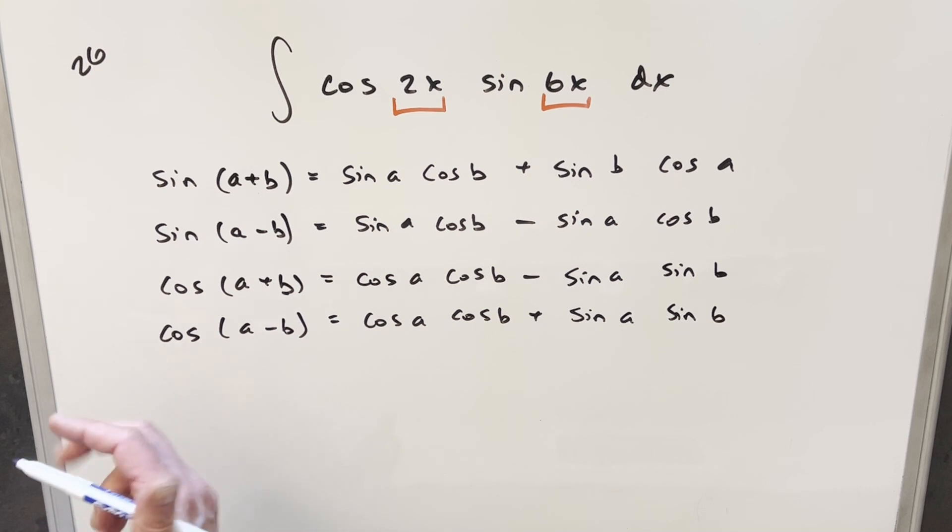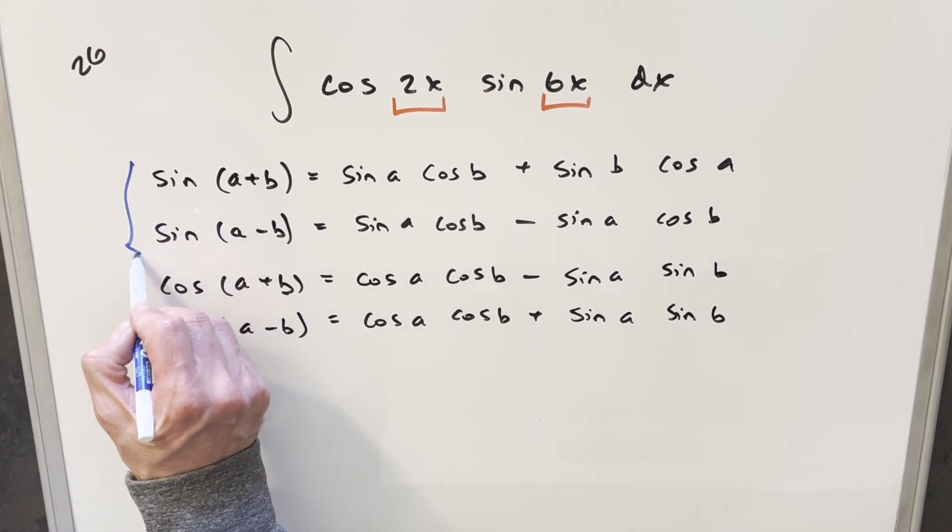Okay, so the way I want to approach this is just by using the angle sum and angle difference formulas for sine and cosine.